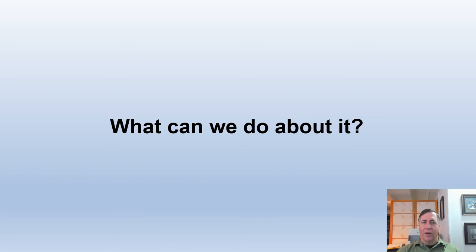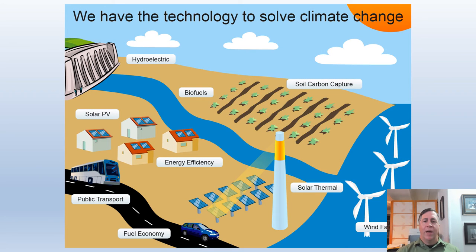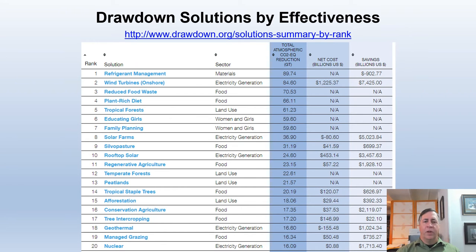So, what can we do about it? There are two basic types of responses to climate change. Mitigation means reducing the sources and enhancing the sinks of greenhouse gases to reduce the extent to which climate change happens. Adaptation is reducing the negative impacts of the change that does happen by adjusting natural and human systems to reduce the harm. We already have the technology to reduce climate change by replacing fossil fuels with renewable energy and capturing atmospheric carbon in plants and soils. Project Drawdown identified 80 different solutions to reduce greenhouse gas emissions or remove CO2 from the atmosphere, but no single solution can do the job — we have to consider all of them, and most of them would actually save money.